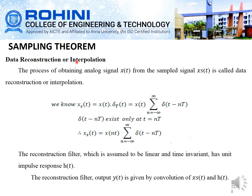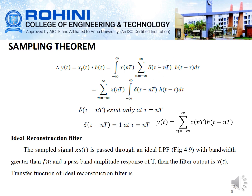Next is data reconstruction and interpolation. The process of obtaining the analog signal x(t) from the sampled signal x_s(t) is called data reconstruction and interpolation. Here, we take the inverse transform to reconstruct the signal. The reconstruction filter, which is assumed to be linear and time-invariant, has unit impulse response h(t), and the filter output y(t) is given by the convolution of x_s(t) and h(t).